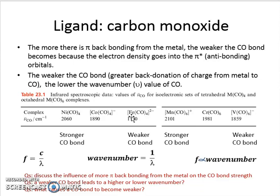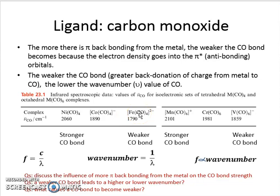If the carbon-oxygen bond is weaker, the bond length is longer. If that bond is longer, it will vibrate slower. Since frequency and wavenumber are directly proportional, a longer bond gives a lower wavenumber. To recap: iron with oxidation state minus two donates more electron density into the CO pi star orbital, weakening the carbon-oxygen bond. A weaker bond is longer, and a longer bond vibrates at a lower wavenumber.